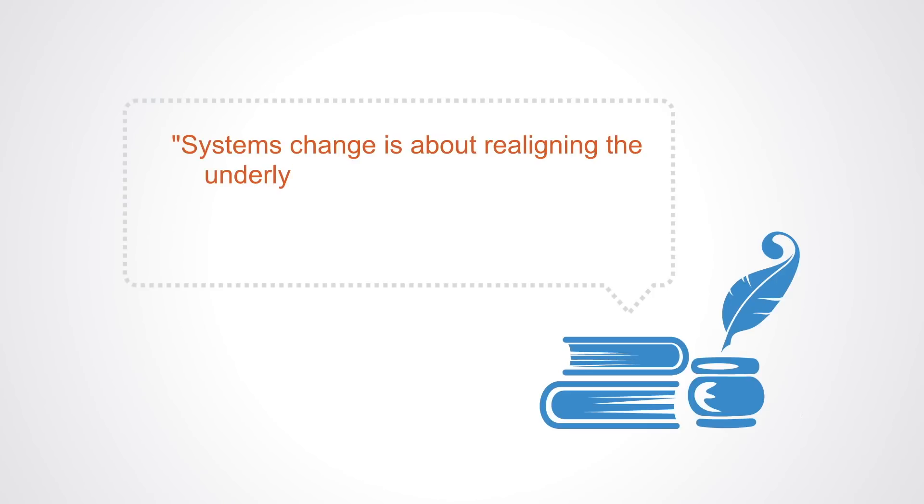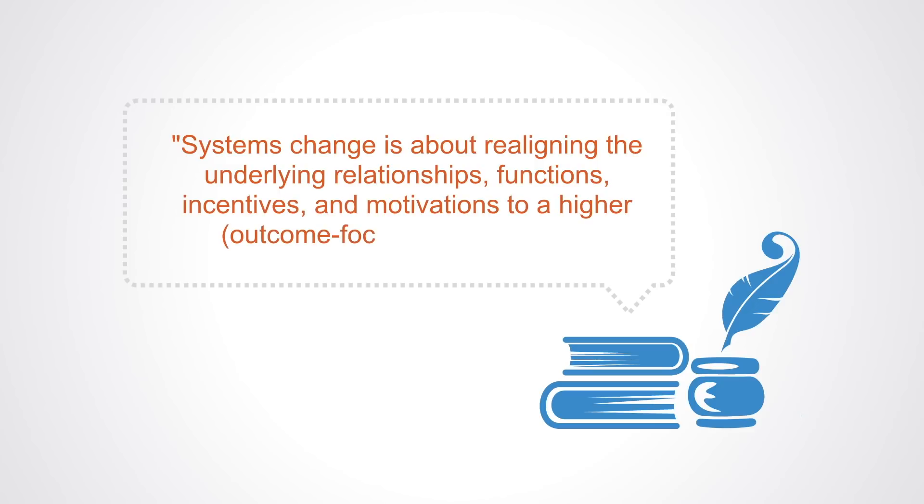The result is the emergence of some new functional pattern in the system. As Co-Impact highlights in their approach, systems change is about realigning the underlying relationships, functions, incentives, and motivations to a higher, outcome-focused equilibrium.